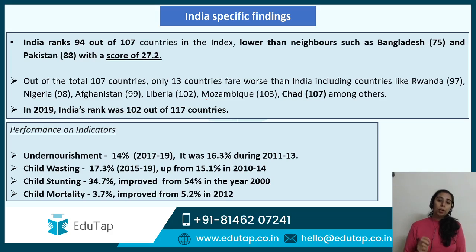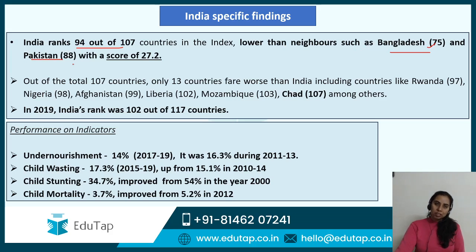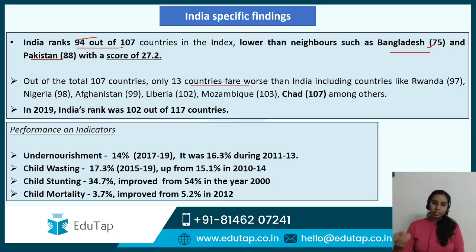Moving to India-specific findings of the Global Hunger Index: we've covered what the index is and how calculation is done. Coming to the findings of the 2020 report related to India — India's rank is 94 out of 107 countries. The surprising thing is that India's rank is lower than neighbors like Bangladesh, which is at 75, and Pakistan, which is at 88th rank. So India's rank is worse than its neighbors. Out of 107 countries, only 13 countries fare worse than India, which include Rwanda, Nigeria, and Afghanistan.